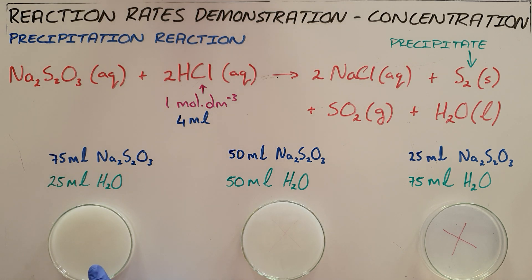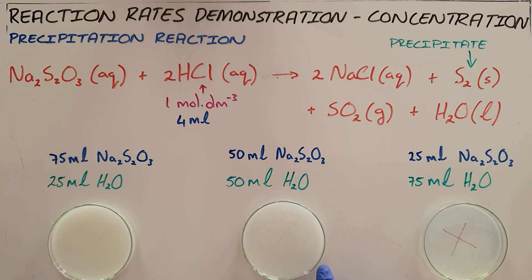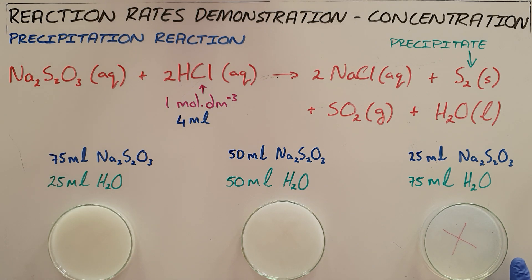This is why we can see the precipitate forming far faster in the highest-concentration reaction than in the next one with a 50-50 dilution ratio, where the reaction has also proceeded faster to form more precipitate than our final reaction, in which we are still waiting for enough precipitate to form to cover the X marked on the petri dish.